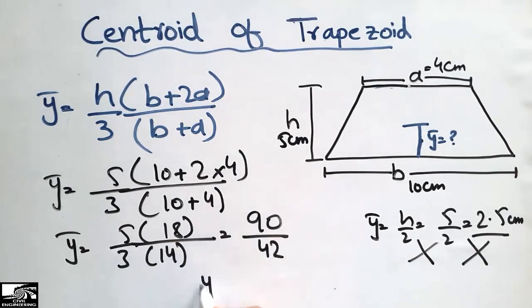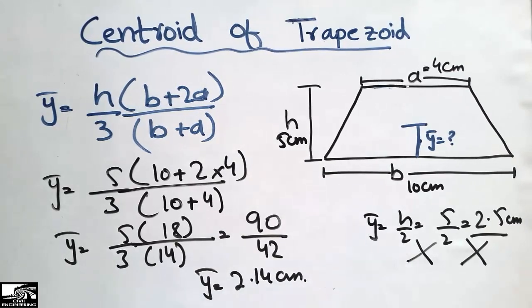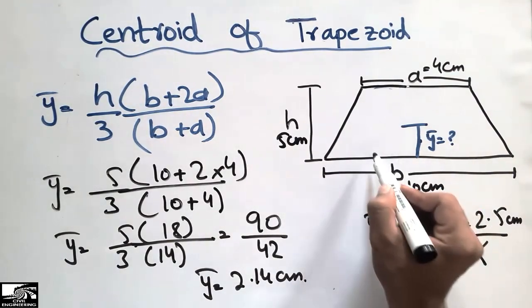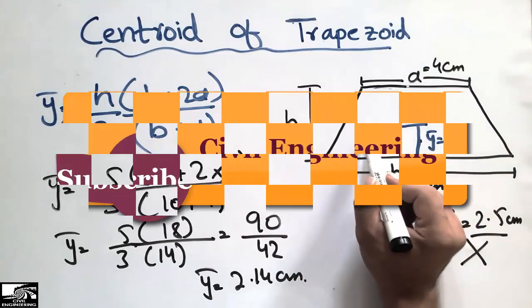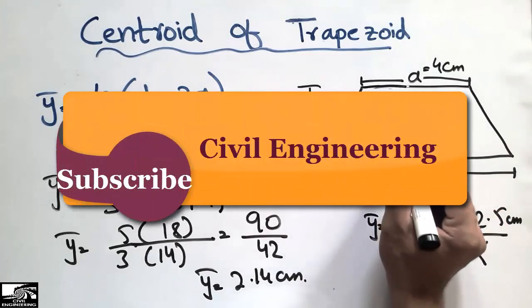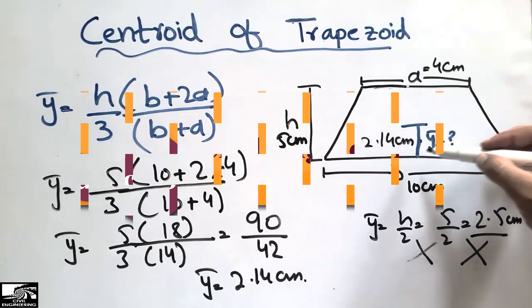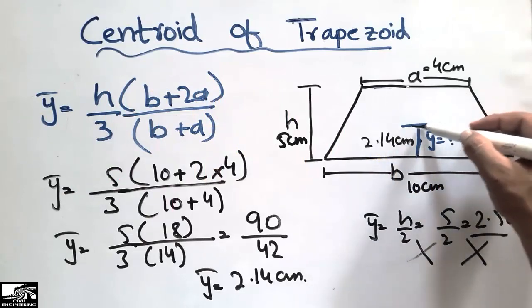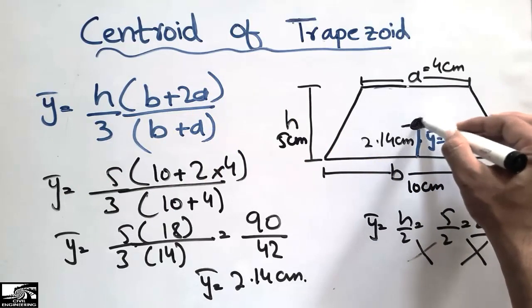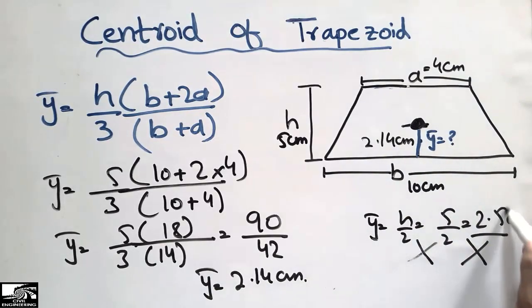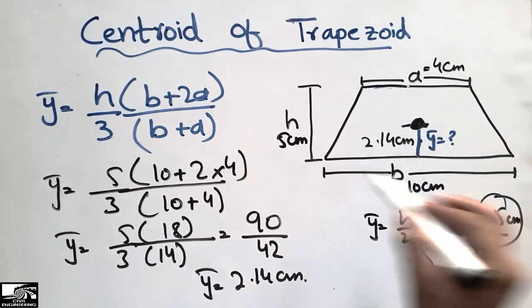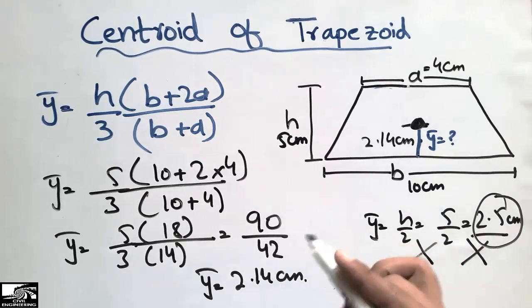We get 90 divided by 42 which comes out to be 2.14 centimeters. This means the centroid is 2.14 centimeters from the bottom, which is not equal to 2.5 centimeters.